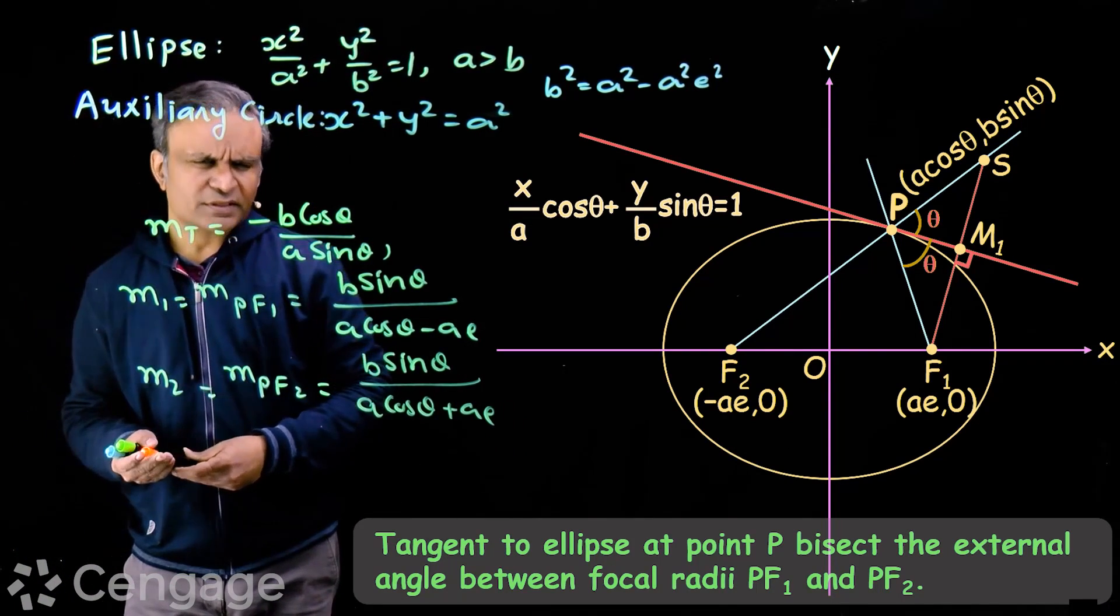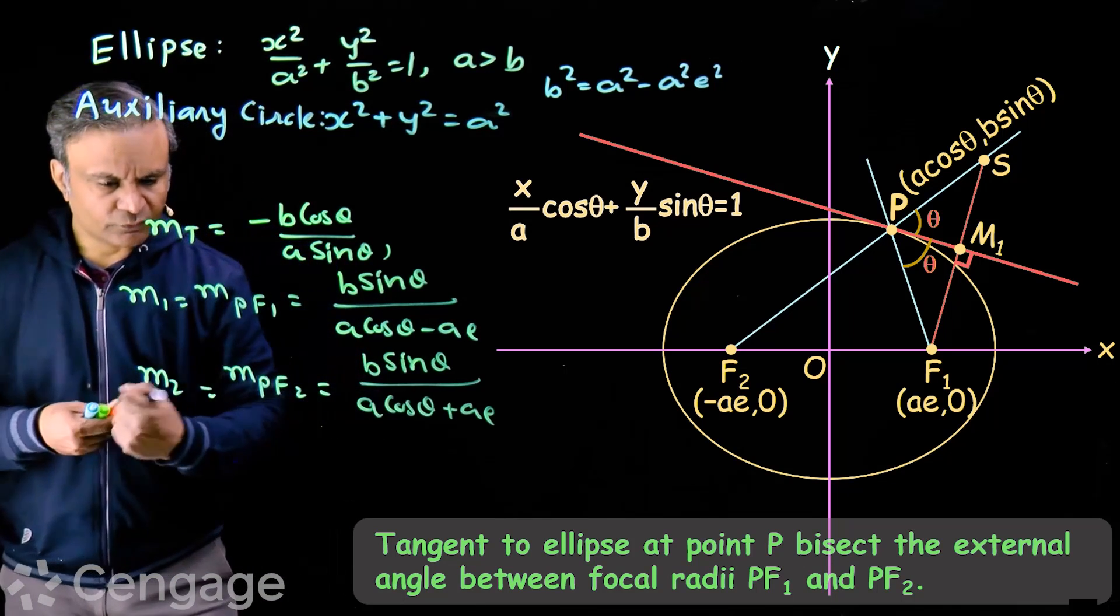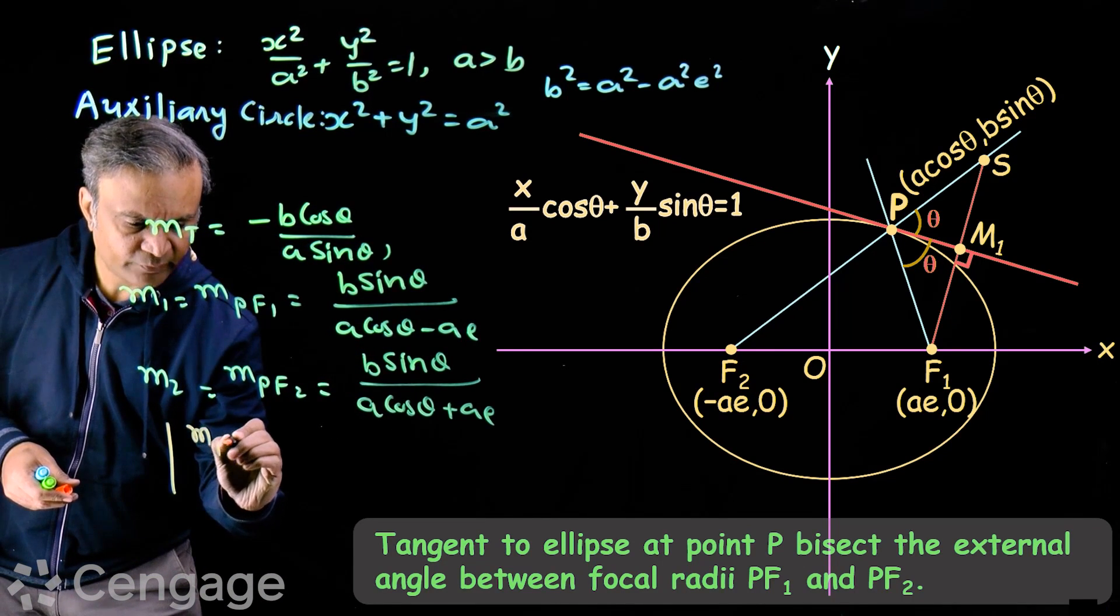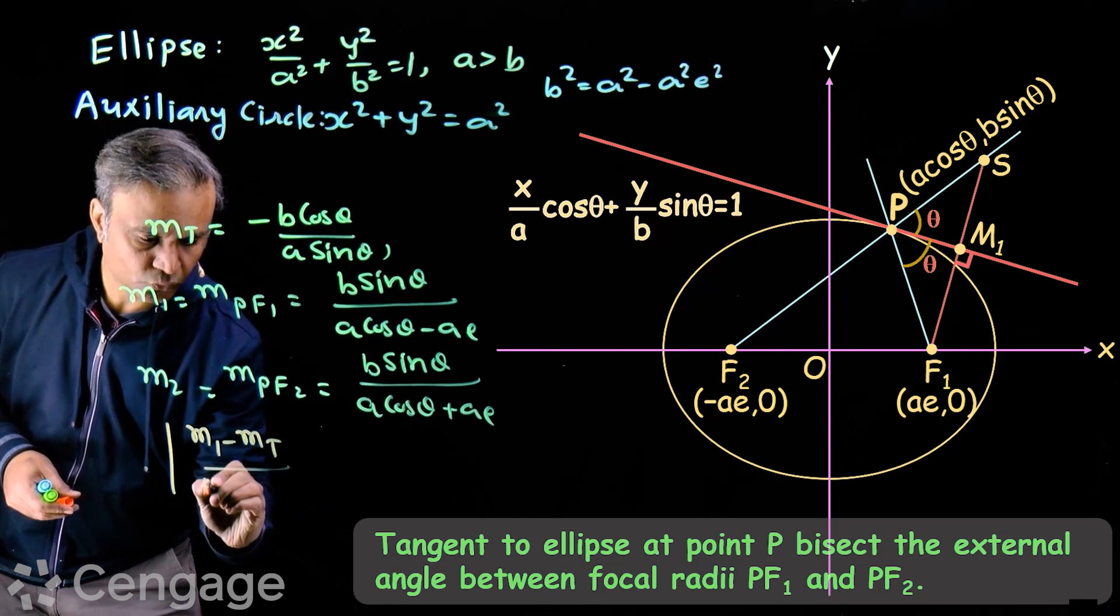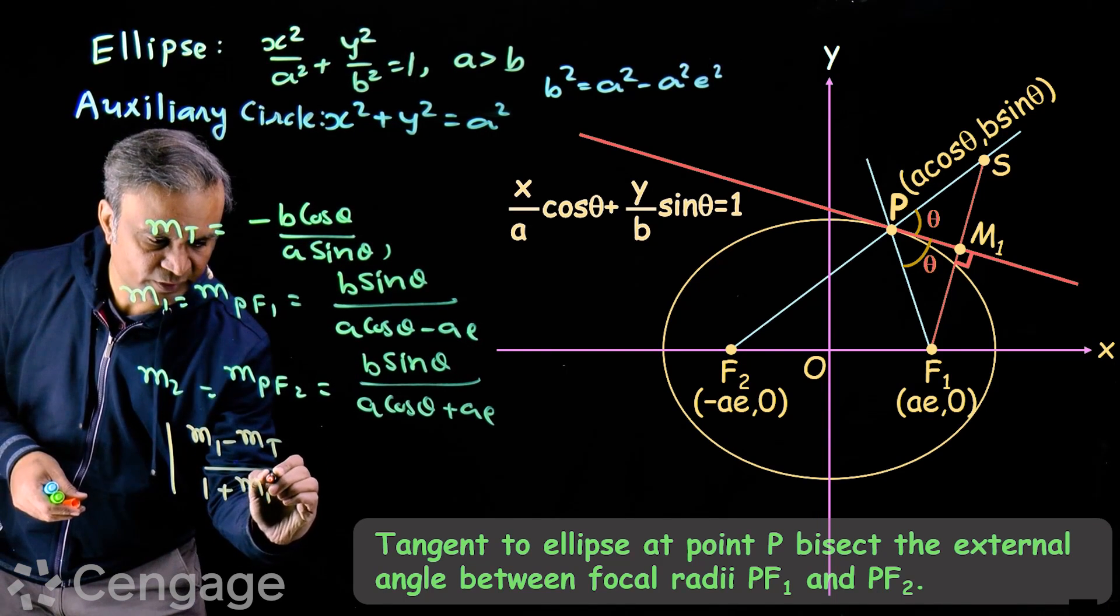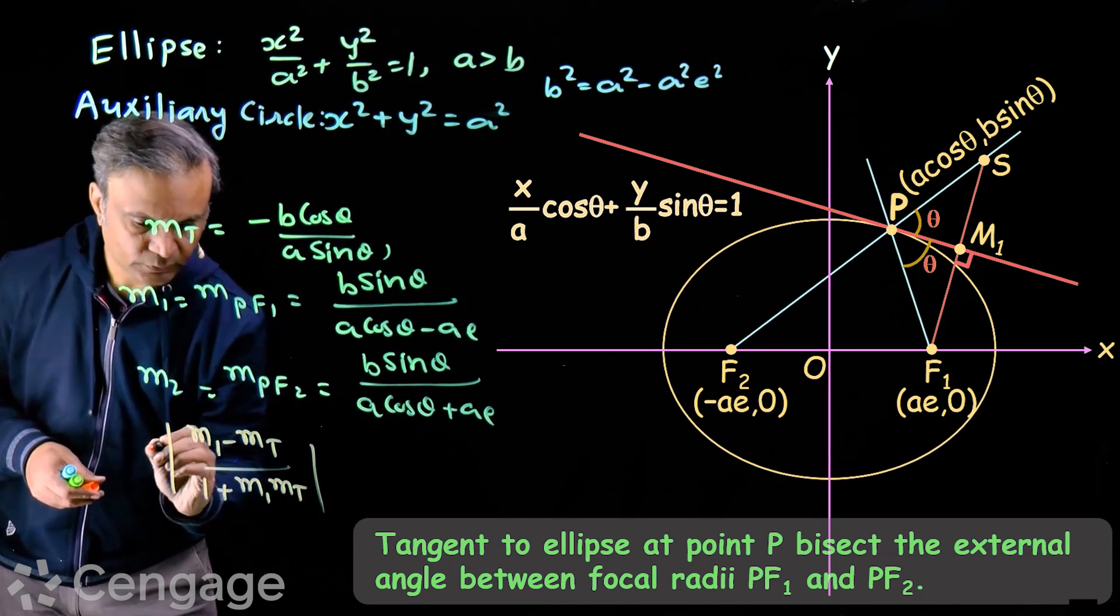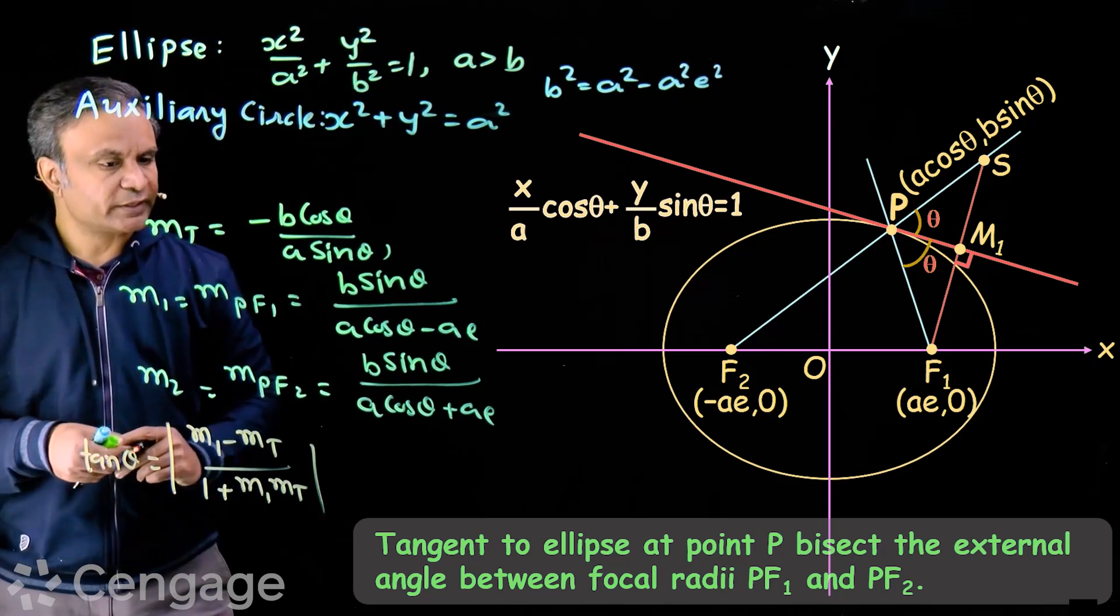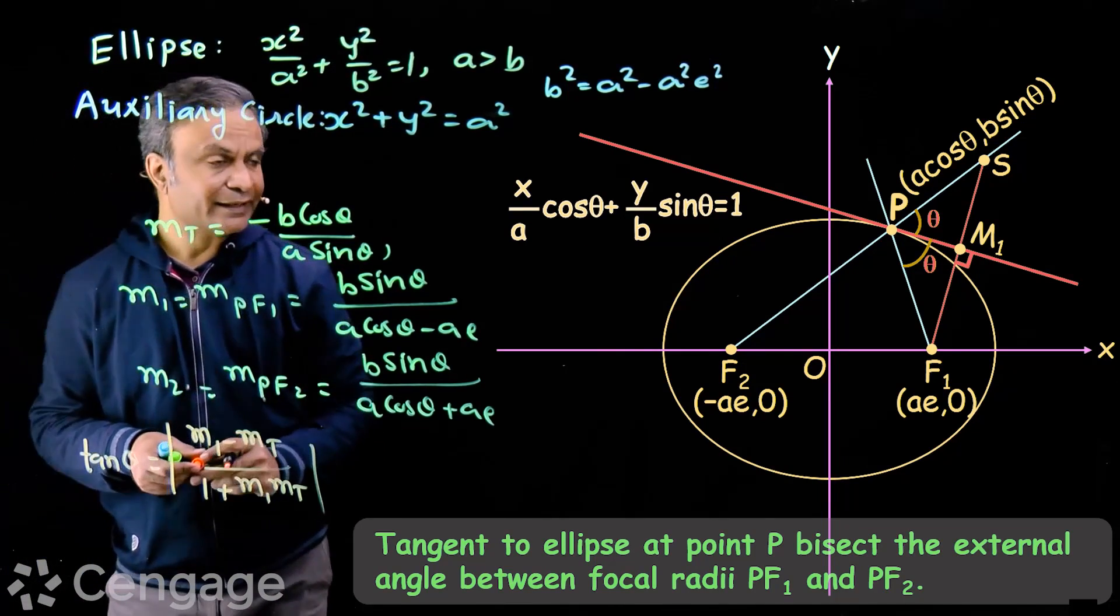Now we will have some calculations. We can prove that modulus of M1 minus Mt over 1 plus M1 Mt. This is a tangent of angle between PF1 and tangent line.